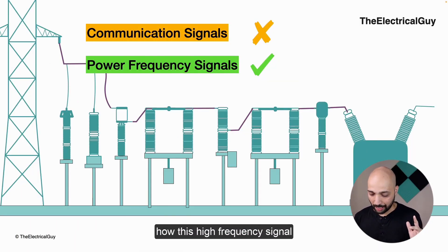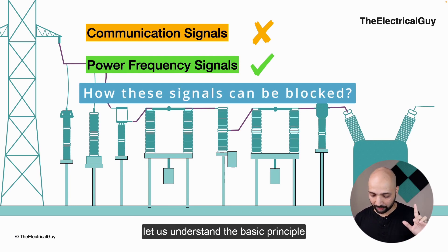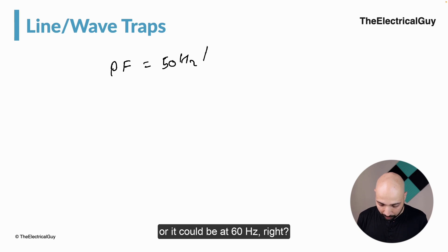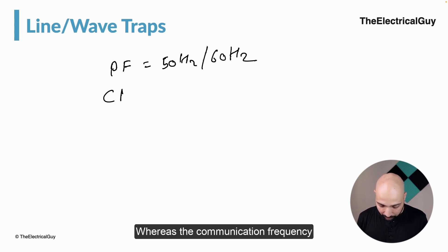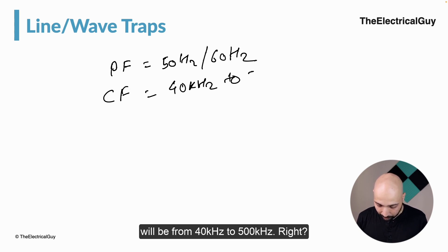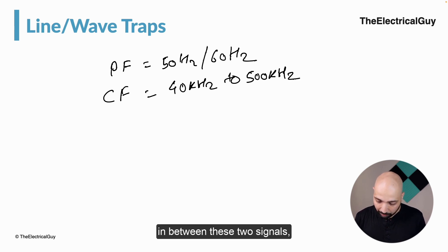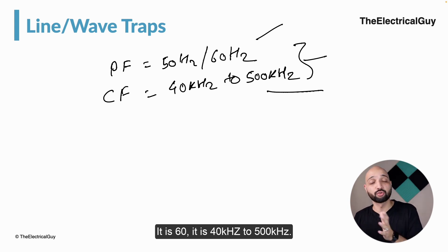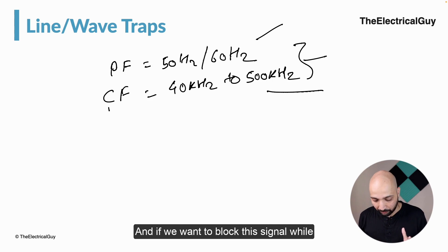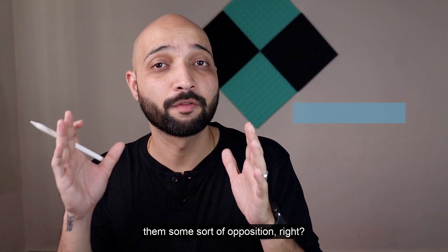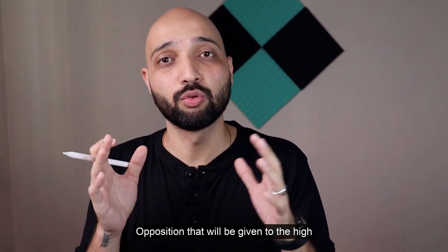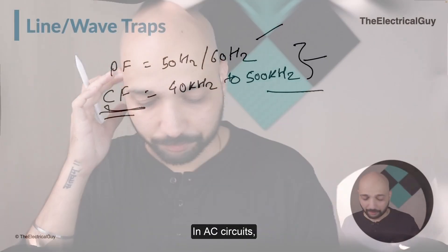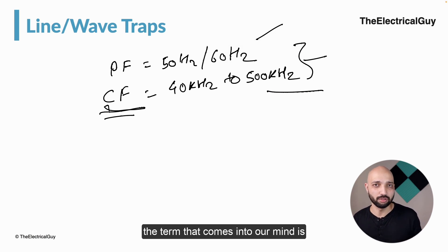The blocking device that does this is nothing but the wave trap, or line trap. Now, how can this high frequency signal be blocked? The basic principle is that power frequency is at 50 or 60 hertz while communication frequency is 40 kilohertz to 500 kilohertz. We need to provide opposition to the high frequency signal without offering opposition to the power frequency signal.